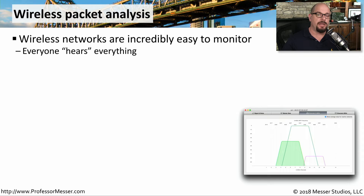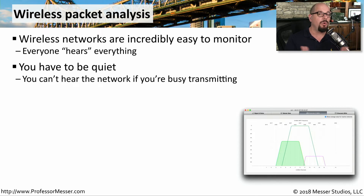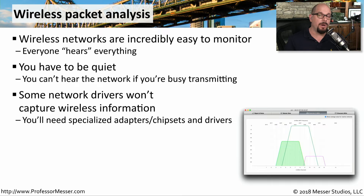Troubleshooting a wireless network can be a challenge. Obviously, wireless is going to be sending signal to whoever might be in the vicinity. Any device that wants to listen in to your network is able to do that, because everything is going through the air. If you're going to use software that's listening into this network, then that software needs to disable the transmission function of your wireless card. Because if you're transmitting, you won't be able to hear anything else on the wireless network. You also want to be sure you have the right kind of wireless interface card that's able to perform these analysis functions. You may need a specific adapter card or wireless chipset to be able to put the card into this wireless analysis mode.